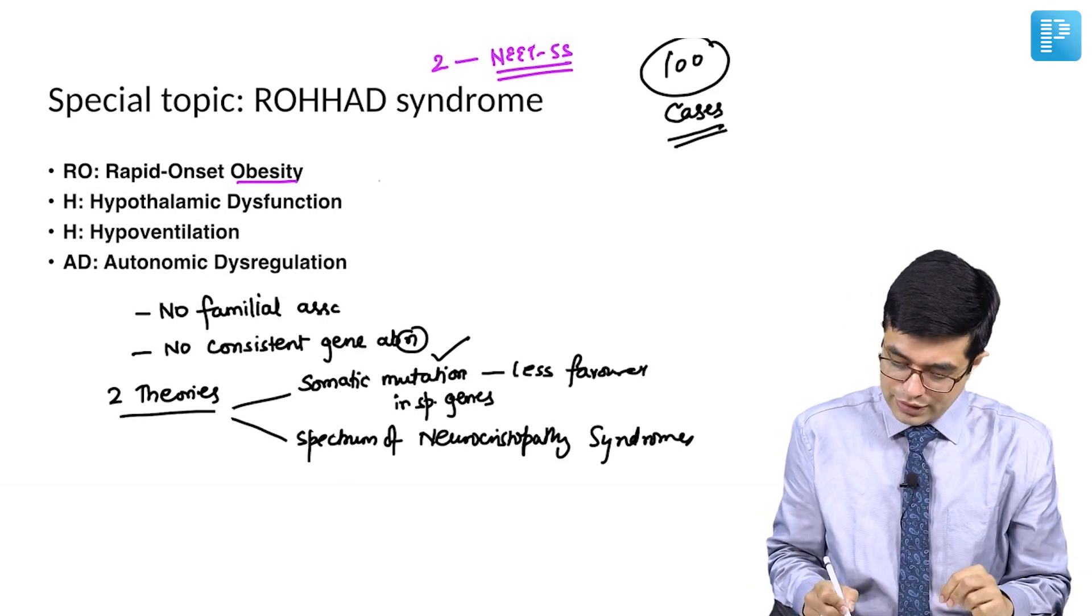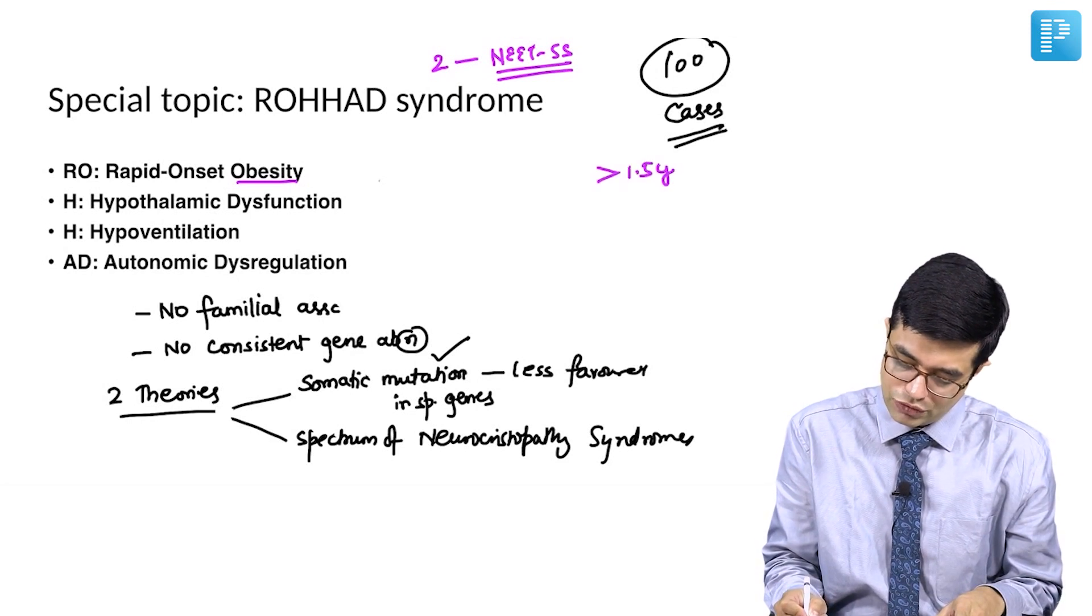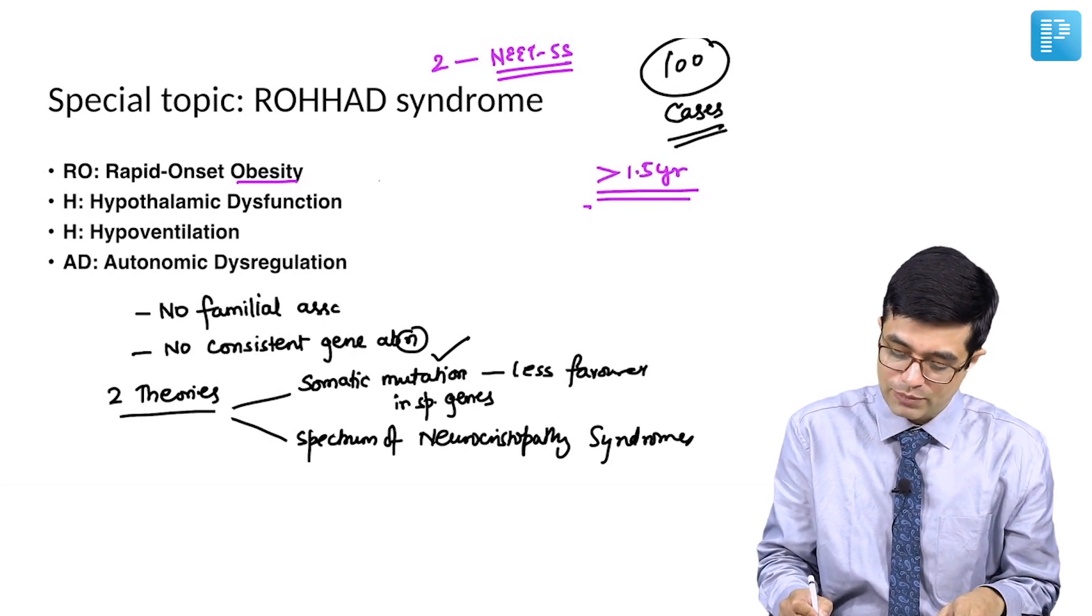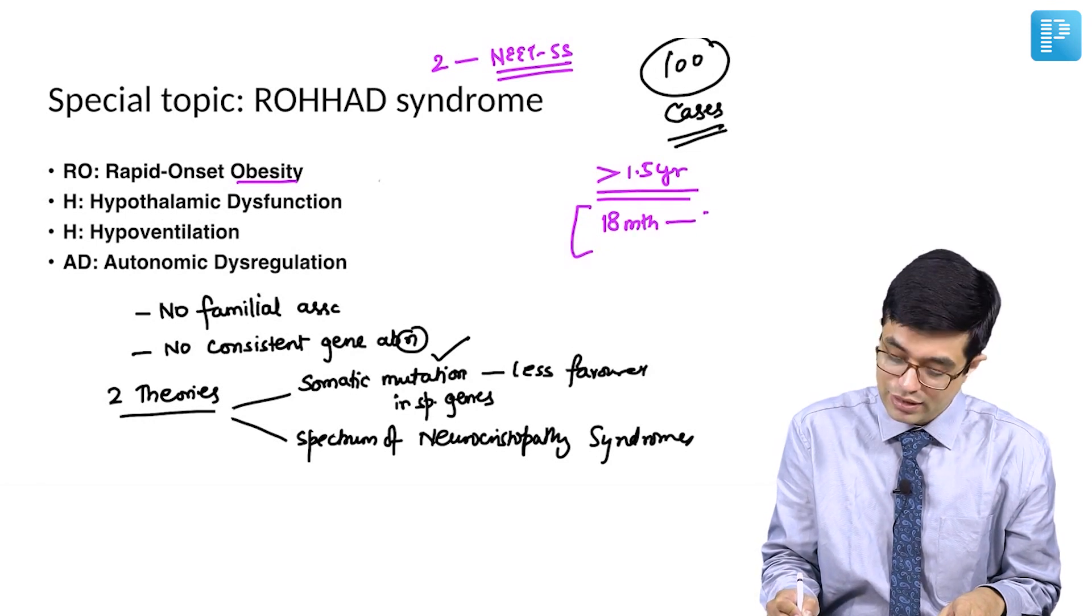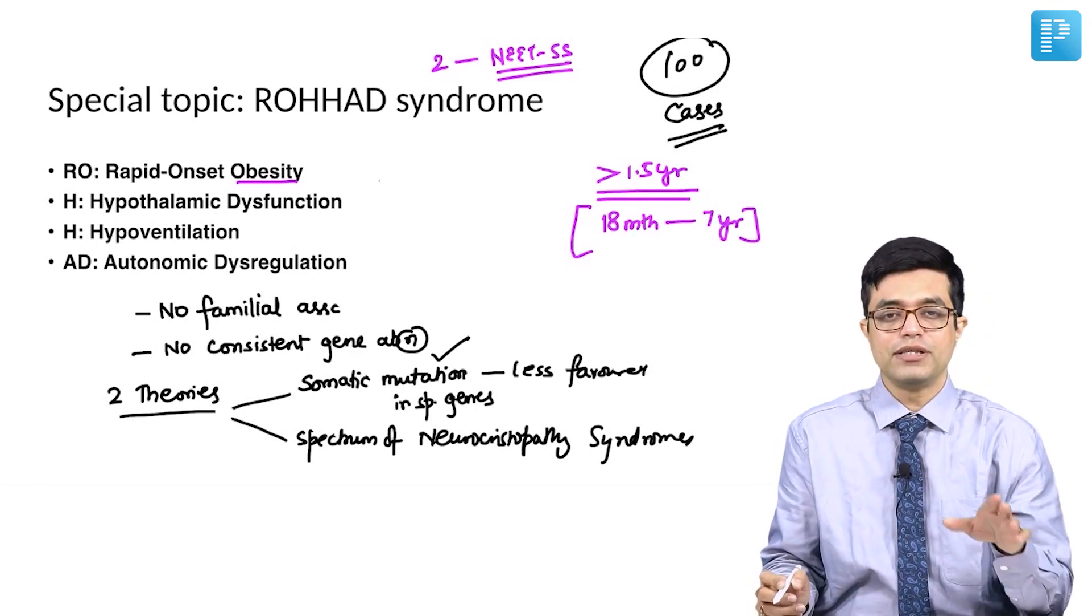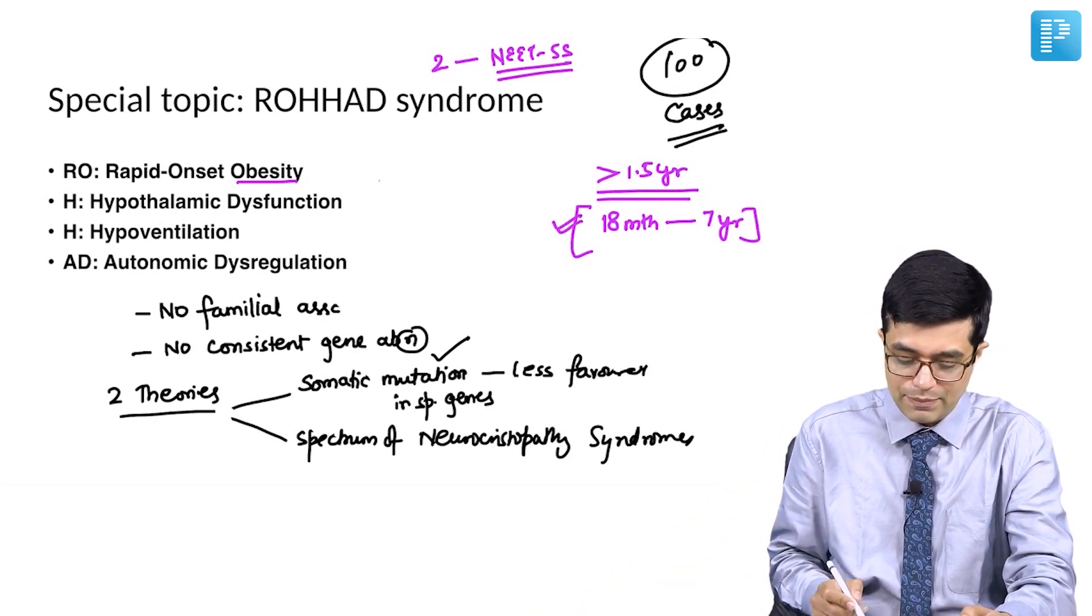The important thing to remember is for Rohard syndrome diagnosis, the child should be more than 1.5 years of age. The age is 18 months, that is 1.5 years, till 7 years of age, although it has been described till as late as 15 years of age. This is the age group during which Rohard syndrome happens.